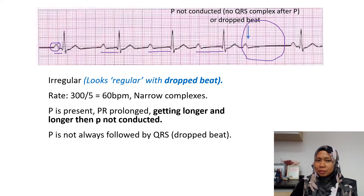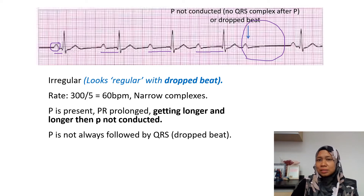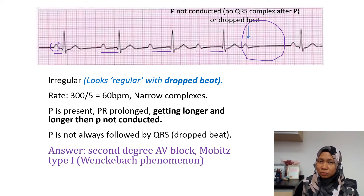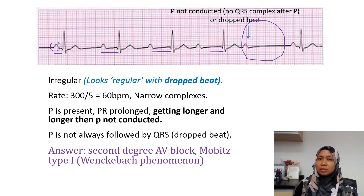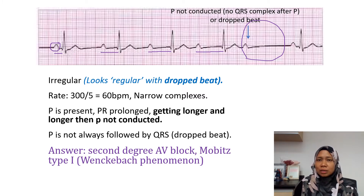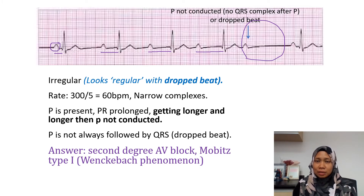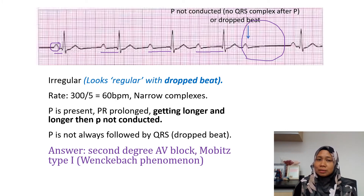The P wave is present and the PR interval is prolonged, getting longer and longer, and then the P is not conducted. So this is what happens in second degree AV block, Mobitz type 1. This is a disease of the AV node — similar to first degree. The AV node becomes tired and more tired, and suddenly it falls asleep and resets. After the reset, it becomes its normal self again, but then the cycle continues. So this is what we call Mobitz type 1, second degree AV block.